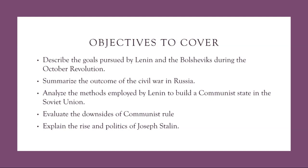Next, we'll be summarizing the outcome of the civil war in Russia. Following the October Revolution, Russia descended into a brutal civil war between the Bolshevik Red Army and various anti-Bolshevik factions known as the Whites. The Red Army, led by Trotsky, ultimately emerged victorious, consolidating Bolshevik power and establishing the Soviet Union in 1922. The civil war resulted in widespread devastation, loss of life, and Bolshevik control over the vast territories of the former Russian Empire.